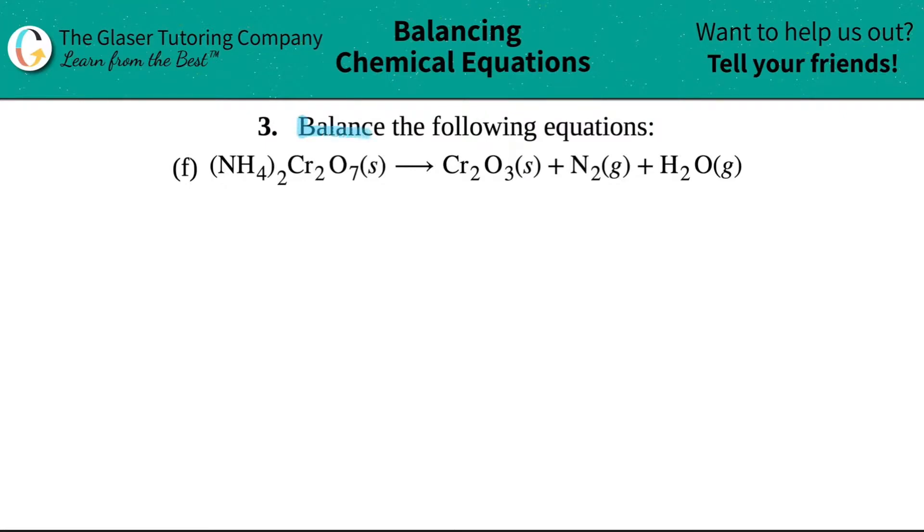Number three, balance the following equations. They give us this huge blob of something. We have (NH4)2Cr2O7 solid, which will yield Cr2O3 solid plus N2 gas plus H2O gas.